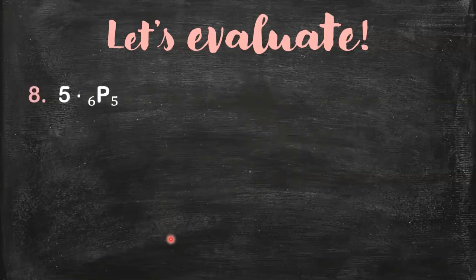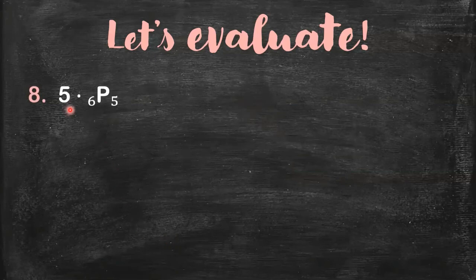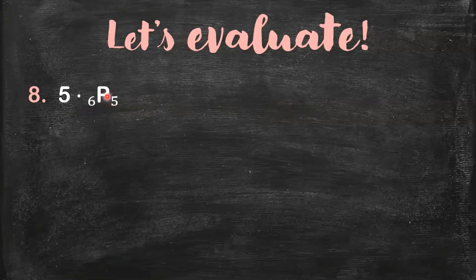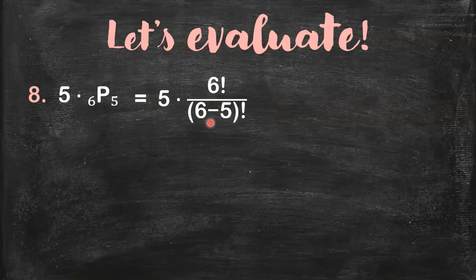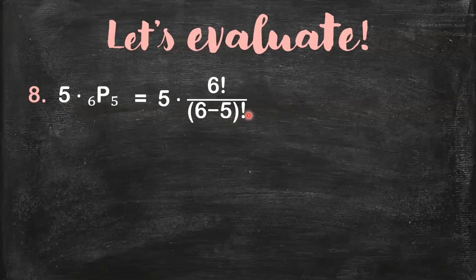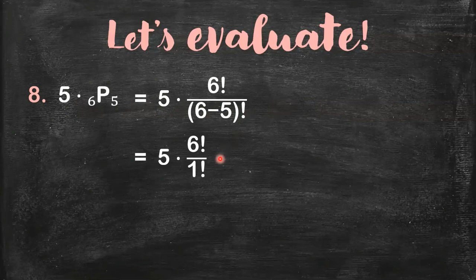Last example. We have here 5×6P5. So you're going to have this. We write 6P5 in terms of factorials. And then, we try to simplify this factorial expression. 6 minus 5, it's 1. 1 factorial - it's just 1. So you can actually remove the 1 factorial. It is simply 5×6 factorial. And what is 6 factorial?